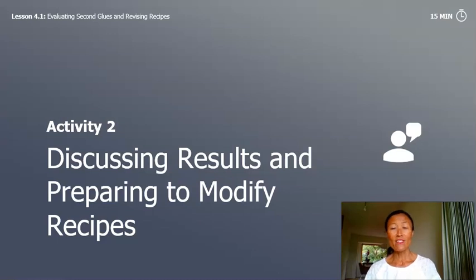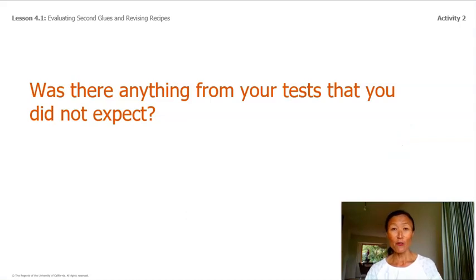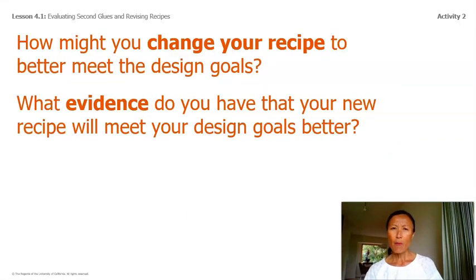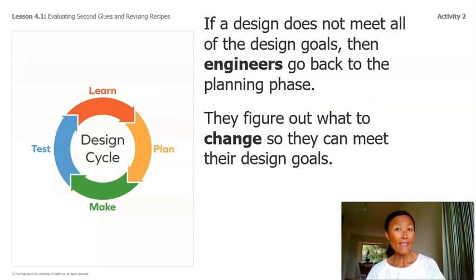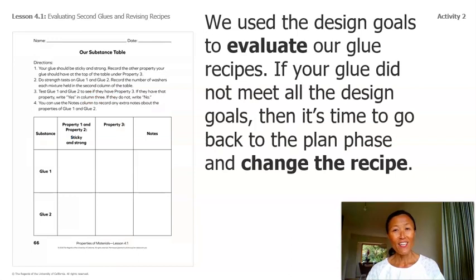Now on to Activity 2: Discussing Results and Preparing to Modify Recipes. Was there anything from your test that you did not expect? How might you change your recipe to better meet the design goals? What evidence do you have that your new recipe will meet your design goals better? If a design does not meet all the design goals, engineers go back to the planning phase and figure out what to change. That's what we're doing as student glue engineers — we use the design goals to evaluate our glue recipe, and if it did not meet all the goals, it's time to go back to the plan phase and change the recipe.